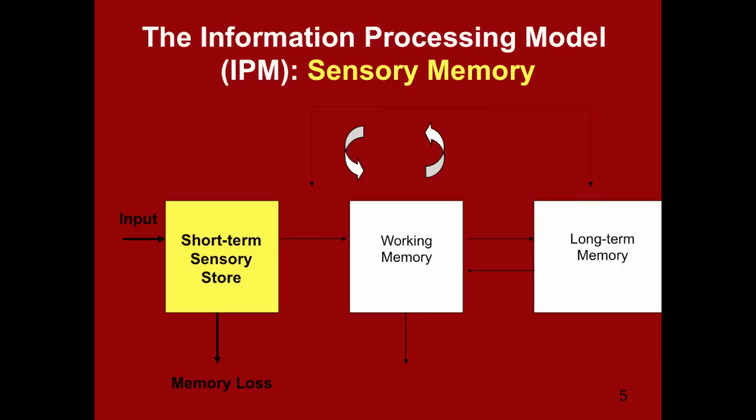What happens to all the information in the short-term sensory store? One of two things can occur: it can either move into working memory, or it gets lost forever. This component is often referred to as a store or register because it's not technically memory. The information moves through the short-term sensory store so quickly that it doesn't even register into our consciousness. If information is not moved into working memory within a half second to three seconds, it gets lost forever. Think about the last time you were walking through campus — all the people, buildings, objects, flags, scenery, plants, trees, maybe birds or people on bikes — all of the conversations you heard. All of these things were coming in through your short-term sensory store, and most were lost very quickly, though they all did register briefly.